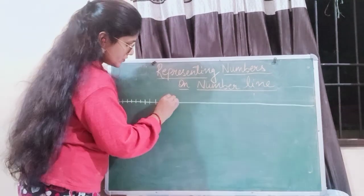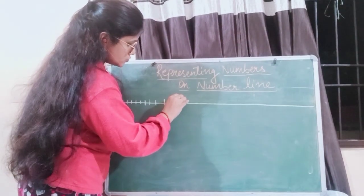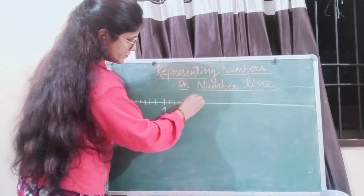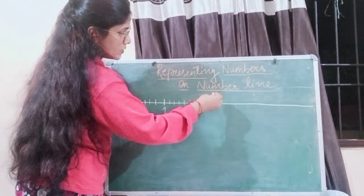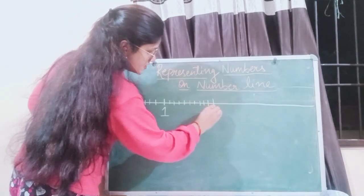Similarly, as we continue, 1.1, 1.2, 1.3, 1.4, 1.5, 1.6, 1.7, 1.8, 1.9 and we get here 2.